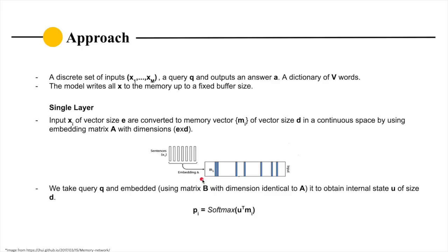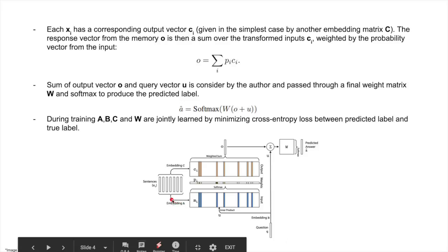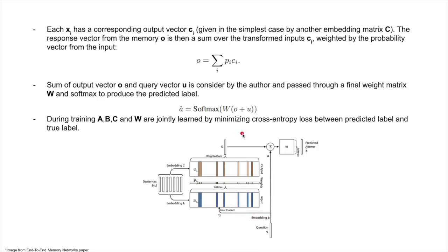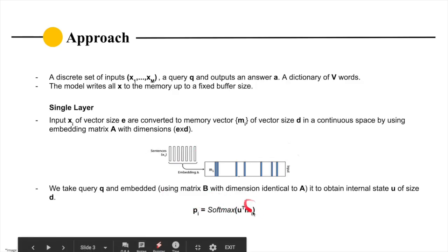A query q is multiplied with a matrix B, which is an embedding B with similar dimension to A, to obtain the internal state u of size d. This question q is multiplied with matrix B or embedding B to get internal u. We compute the matching between u and m by taking an inner product.